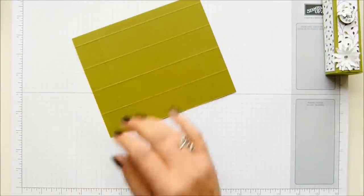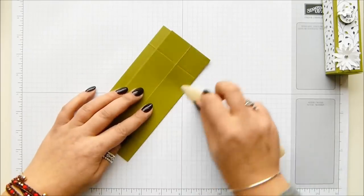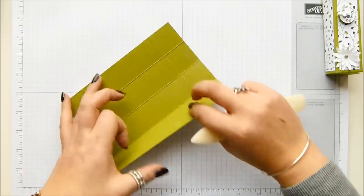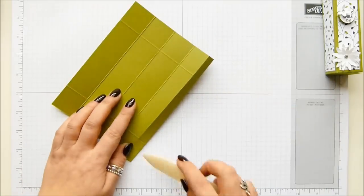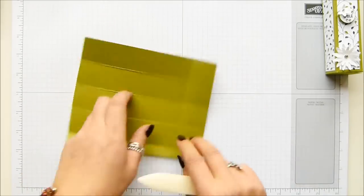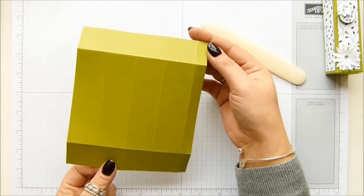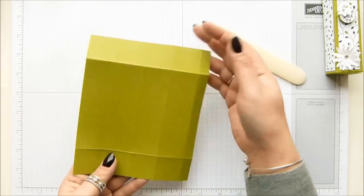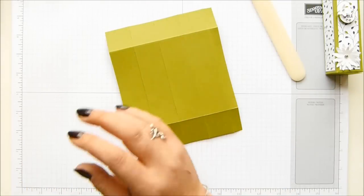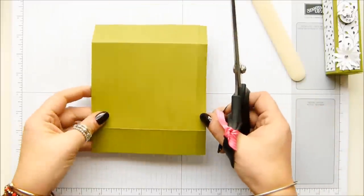Okay, so burnish your score lines. This is such a cute box. You can fill this with treats, got Valentine's coming up, put some nice little goodies in there for your loved ones. The top and the bottom are exactly the same, so just decide which one's going to be the top and which is the bottom, and we're going to trim some bits.